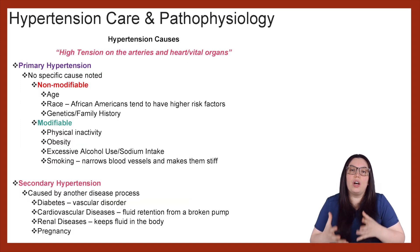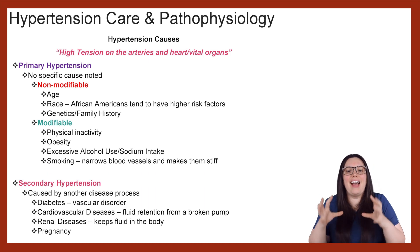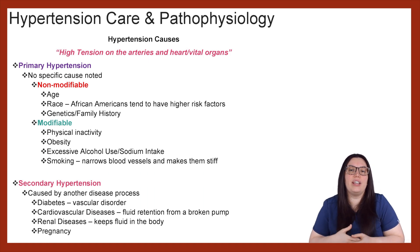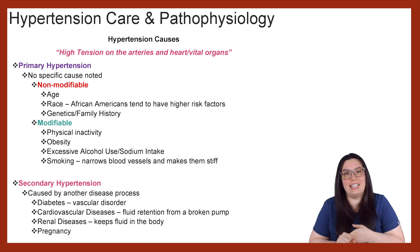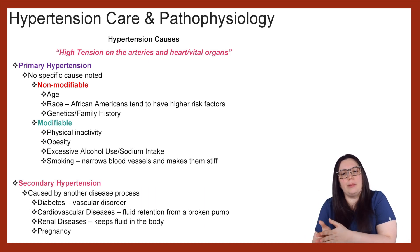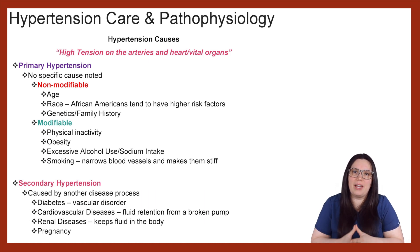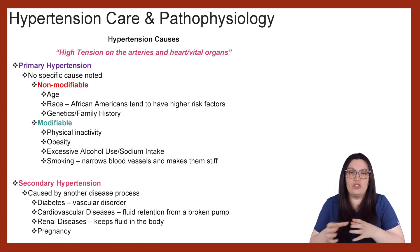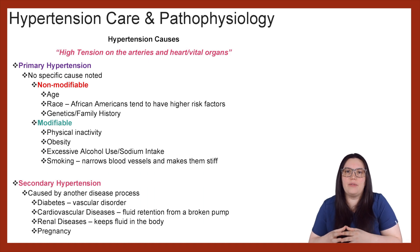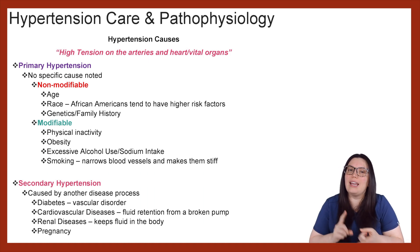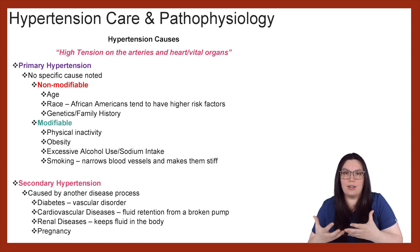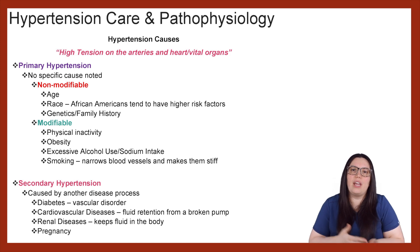So now let's take a look at the causes when it comes to hypertension — that high tension occurring in the arteries as well as the heart and vital organs. We break that down into two categories: primary hypertension and secondary hypertension. When it comes to primary hypertension, there's not going to be a specific cause noted with these patients. We can only look at non-modifiable and modifiable issues. Non-modifiable factors we can't change include age, race — African Americans and Native American Indians tend to have a higher risk — and genetics and family factors.